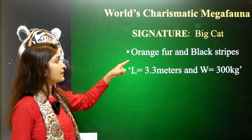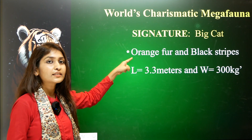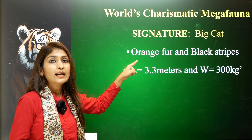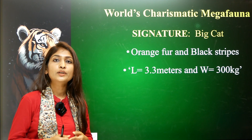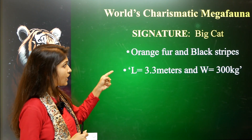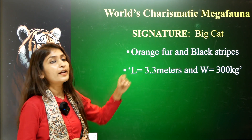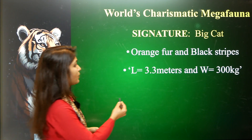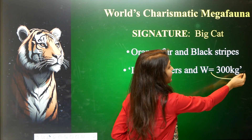The signature of this big cat is orange fur and black stripes. It is called a signature because just like human fingerprints, which are unique to every person, the stripe pattern is unique to every tiger. Its length is 3.3 meters and its weight is approximately 300 kg, which justifies its classification as megafauna.